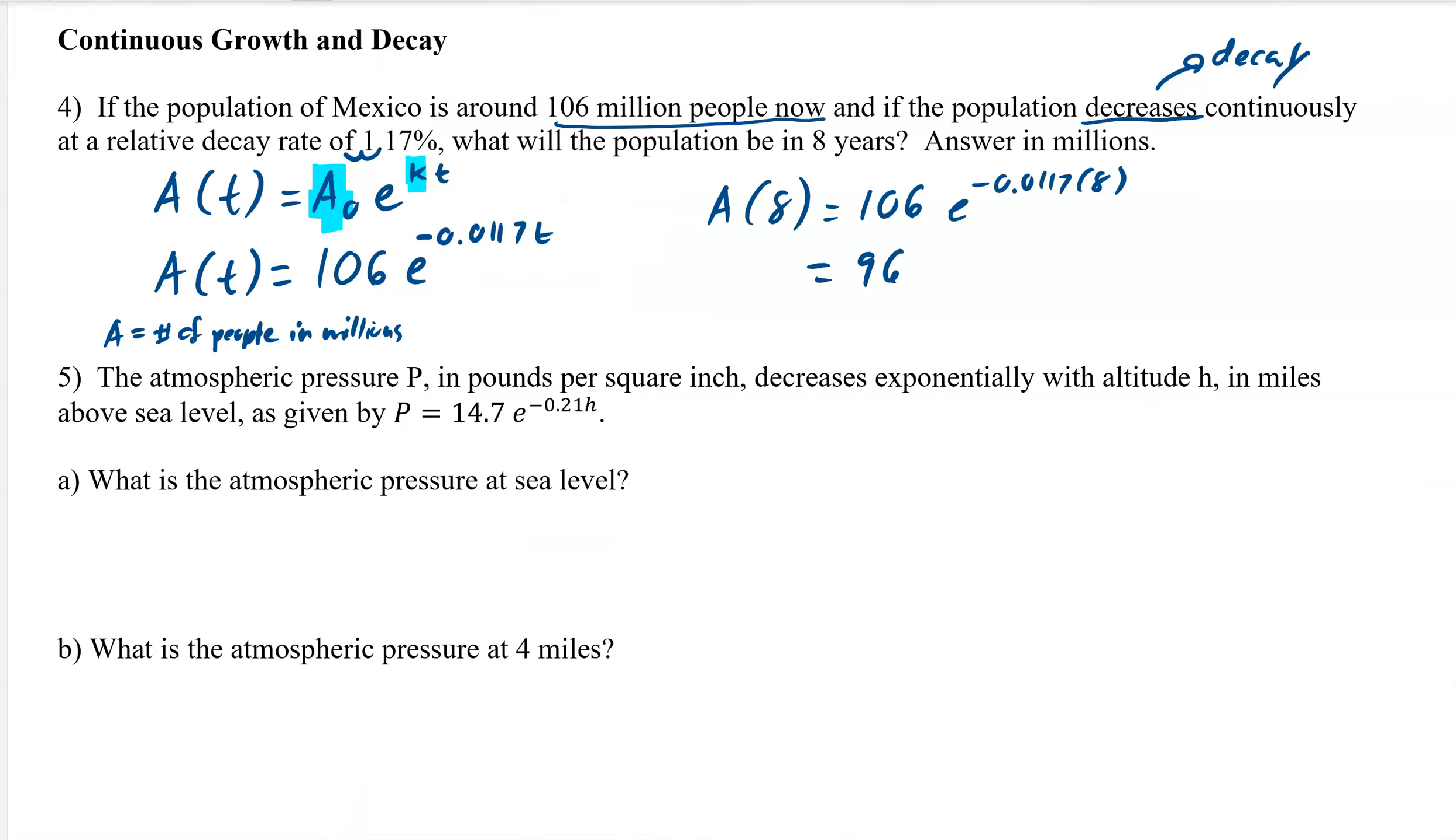So this would then be 96.5 million. It does say answer in millions, so we'll just make that 97, round it, million people. So how many do we expect to have 8 years? 97 million. Let's try another one.